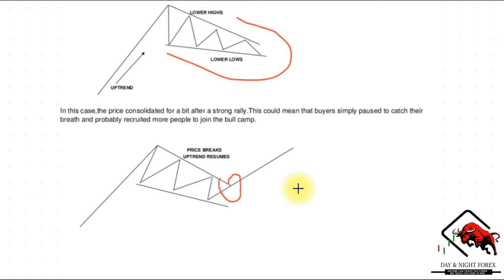The price consolidated for a bit after a strong rally to the upside. This could mean buyers simply paused to catch their breath and recruit more people into the bull camp, while sellers gained some confidence even though their short positions were already in loss. When price breaks out, those sellers get stopped out and forced liquidation occurs — as we also explained with flags. See how the price broke to the top side and climbed significantly higher.